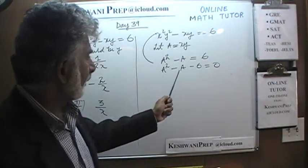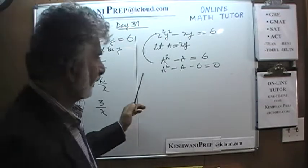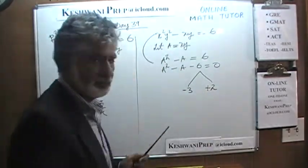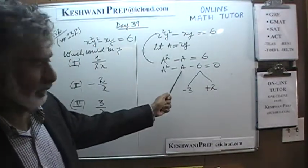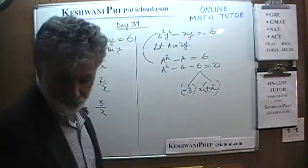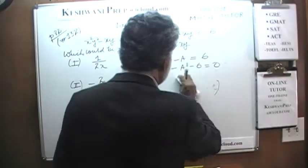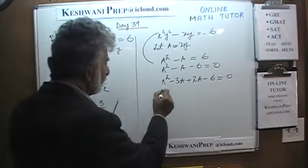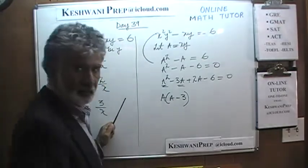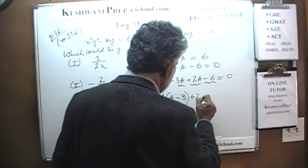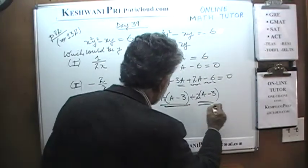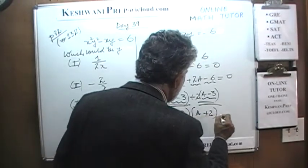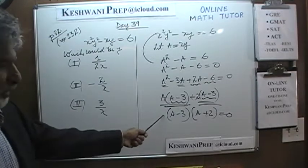We look for two numbers whose product is negative 6 and whose sum is negative 1. Negative 3 and positive 2 will do the job: negative 3 plus 2 gives negative 1, and negative 3 times positive 2 gives negative 6. So it factors into (a minus 3)(a plus 2) equals 0, giving us a equals 3 or a equals negative 2.